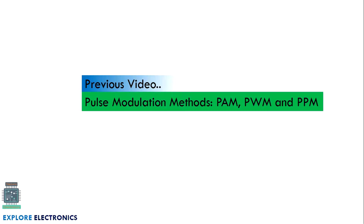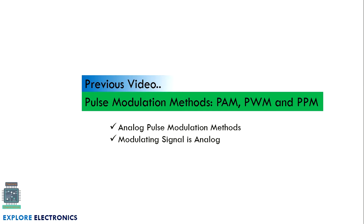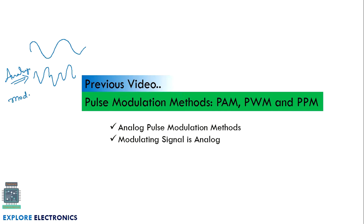In the previous video we have seen PAM, PWM, and PPM — these are pulse modulation methods, and we call these analog pulse modulation methods. The modulating signal chosen for modulation is of analog kind, meaning it is a continuous wave. If it is audio, there is variation in the input like this; this is called an analog signal, and if we take this signal for modulation, we call it analog modulation.